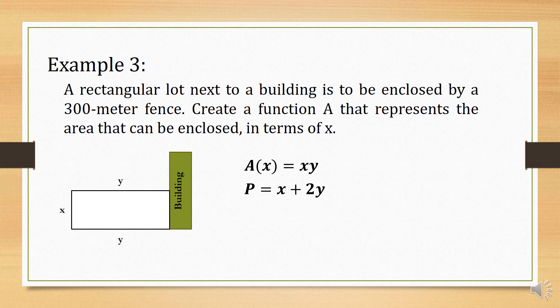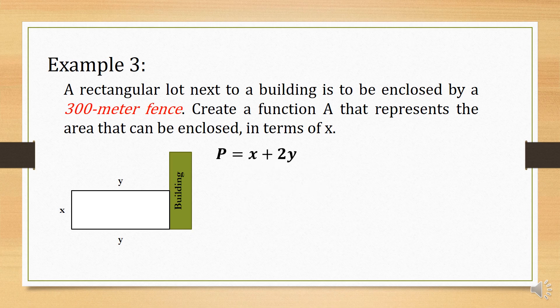Since we are going to fence the rectangular lot, we use the formula for the perimeter of a rectangle. Since only three sides need to be fenced, the perimeter is equal to x plus 2y — we do not fence the side adjacent to the building. Since the lot is enclosed by a 300-meter fence, we substitute 300 for p: 300 is equal to x plus 2y.